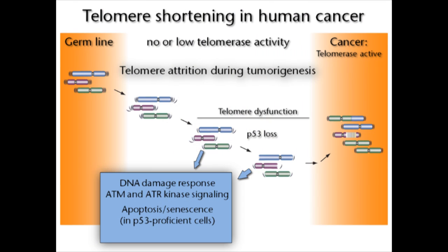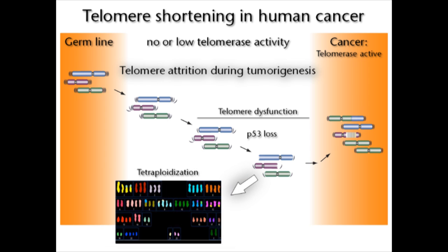Teresa's results suggest what might be happening in the early stages of tumorigenesis. Initially, a cell starts proliferating inappropriately, perhaps due to a lesion in a signaling pathway, and its telomeres shorten. Eventually, the shortened telomeres will no longer repress the DNA damage response at chromosome ends. If these cells have a functional P53 pathway, they will likely undergo apoptosis or senescence, blocking tumor formation. However, if the clone is P53-deficient, endo-reduplication can occur.